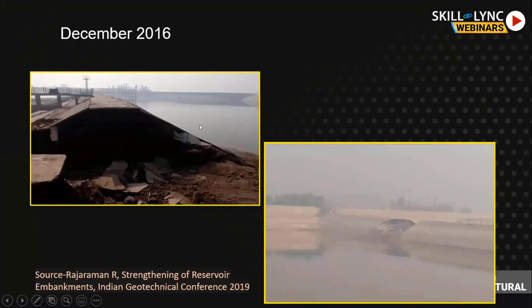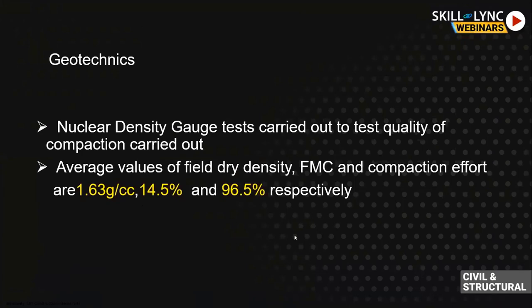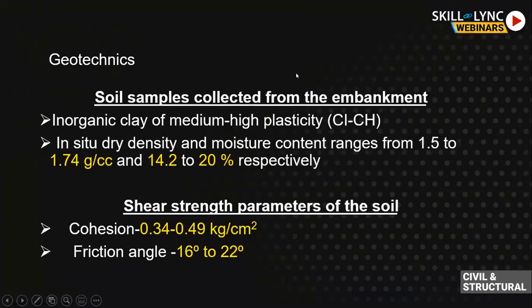We went through all available documents. Various site studies like field dry density, field moisture content, and compaction effort were monitored. Values recorded were 1.63 g/cm³ dry density, 14.5% field moisture content, and 96.5% compaction effort. Soil samples collected from the embankment were CI to CS — inorganic clay of medium to high plasticity.